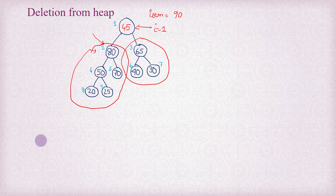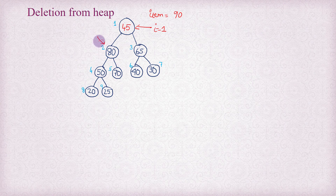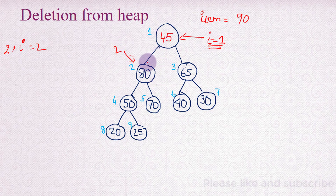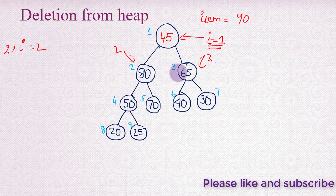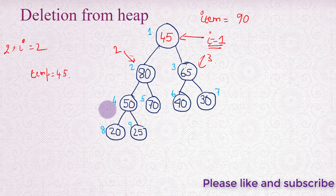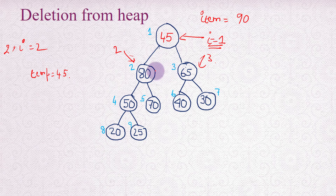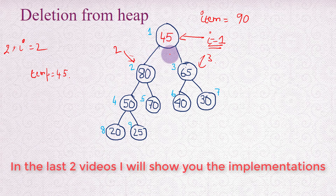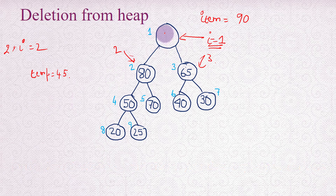To restore the heap, we find the left and right child of i. With i equals 1, the left child is at 2*i = 2 and the right child is at 2i+1 = 3. We compare the two children: 80 versus 65 - the larger one is 80. We then compare 80 with 45, and 80 is larger. So we copy 80 to the root, keeping 45 in a temporary variable 'temp' and looking for the position where we will place 45 in this restore down operation.